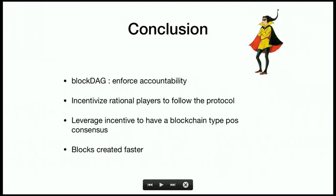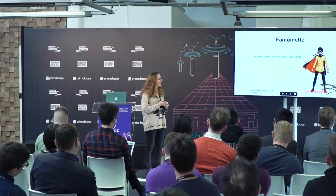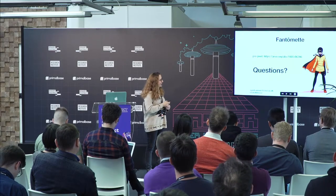To conclude: we use a block DAG to enforce accountability — we know what players are doing and forbid cheating. We incentivize rational players to follow the protocol using an incentive scheme that rewards connectivity. We leverage incentives to have a blockchain-type consensus protocol, unlike other proof-of-stake protocols that use PBFT-style approaches. Blocks are created faster, making it more scalable. The paper is available online.